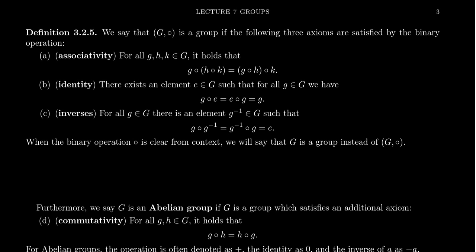We are now in a setting where we can define what we mean in abstract algebra by a group. A group is a set equipped with a binary operation that satisfies the following three properties, which we call axioms. From a logical point of view, the axioms are fundamental truths that must be true in order for the object to be a group. So it's not just good enough to have a set with a binary operation — that binary operation has to satisfy these three conditions to be a group.